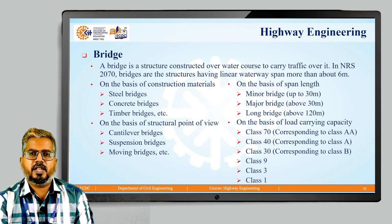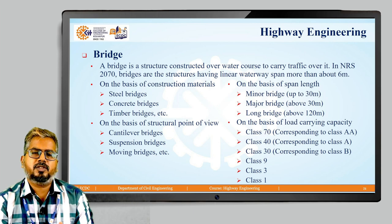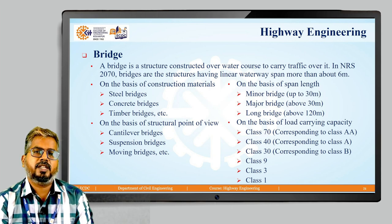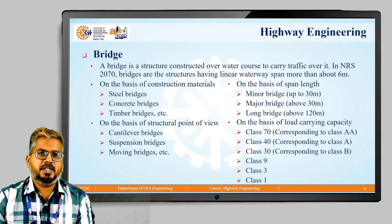On the basis of load carrying capacity, we have various types of bridges like class 70, 40, 30, 9, 3, and 1. The classes 70, 40, and 30 correspond to class A, class A, and class B respectively, based on the load carrying capacity of that particular bridge. The details of this will be studied as a part of bridge engineering.